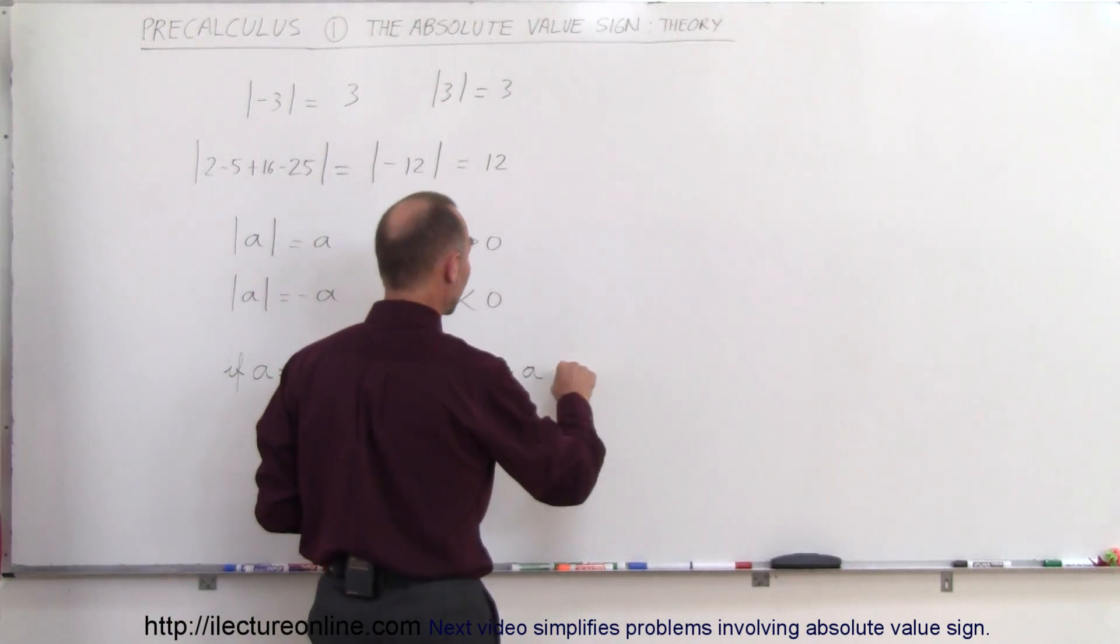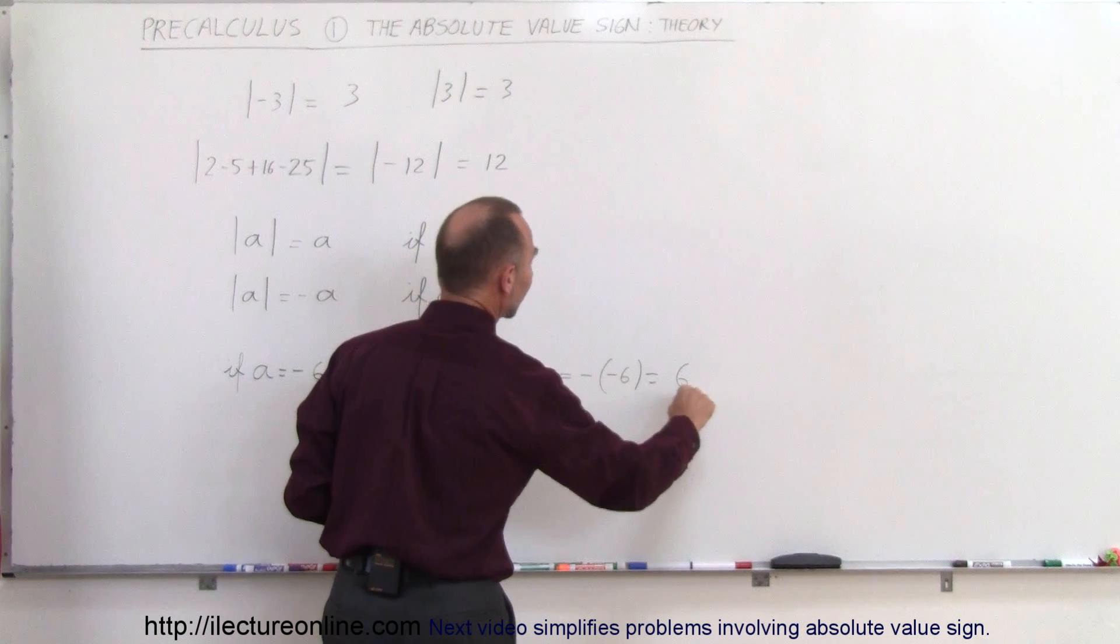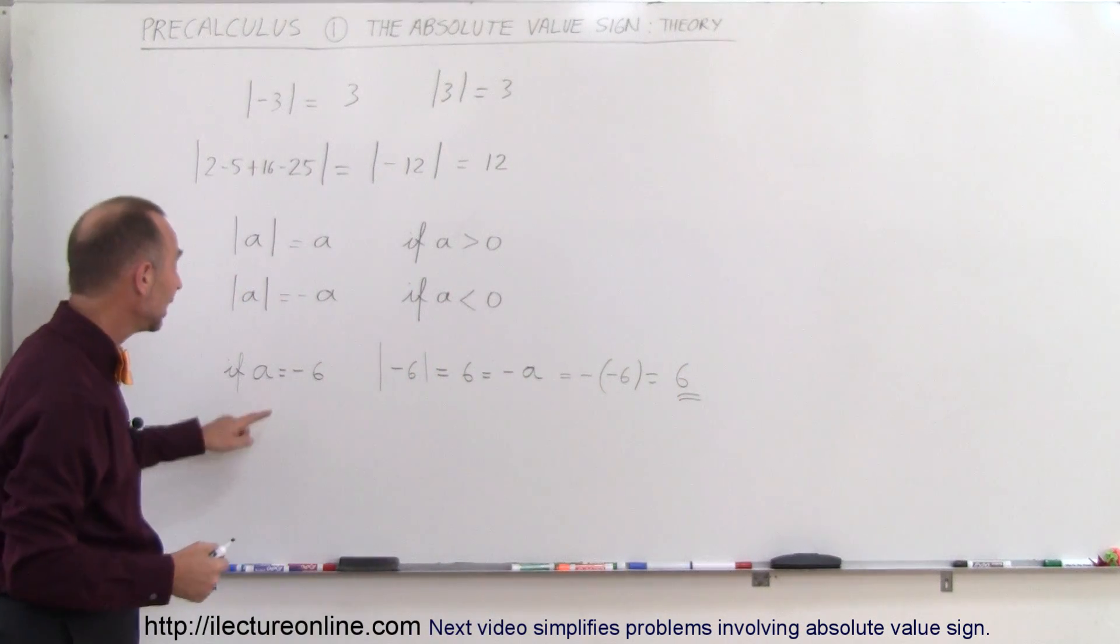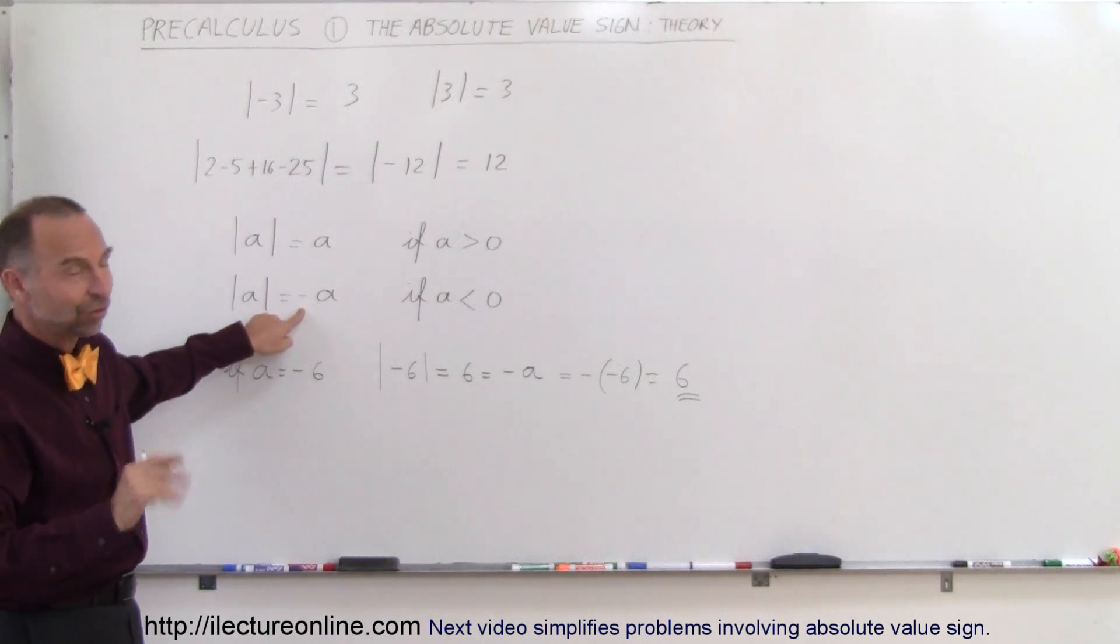And you can see why that is, because this is equal to negative times the negative 6, which is equal to a positive 6. And therefore, the absolute value symbol gave you a positive result, even though it may appear in this case that you got a negative result, which is not the case.